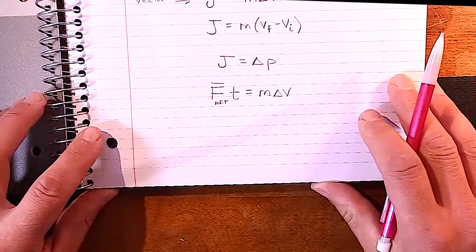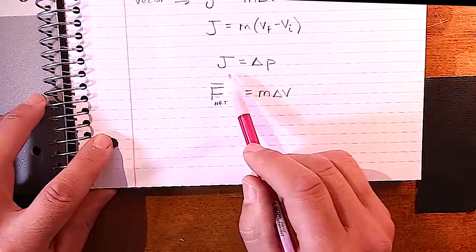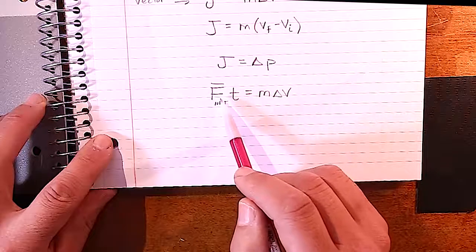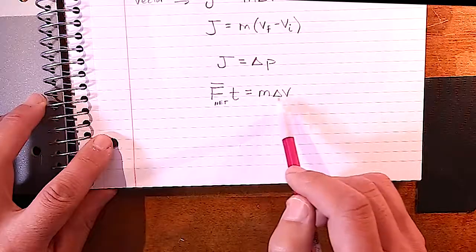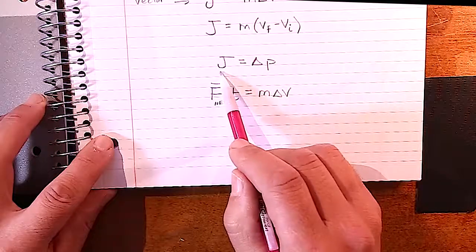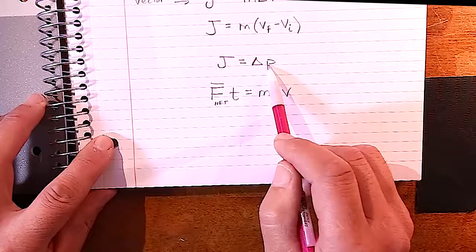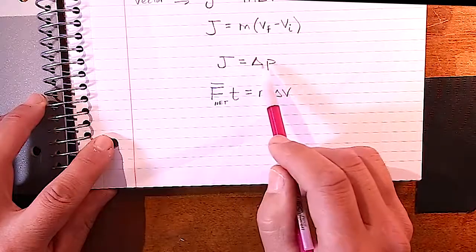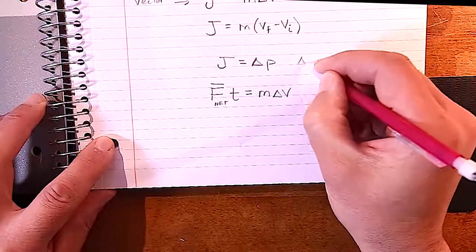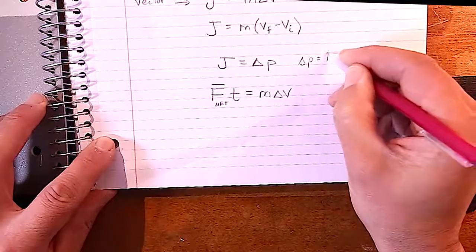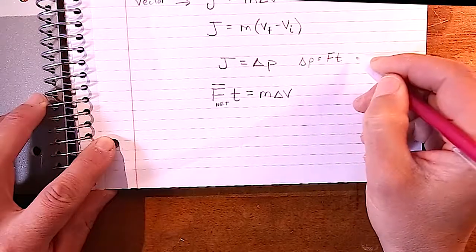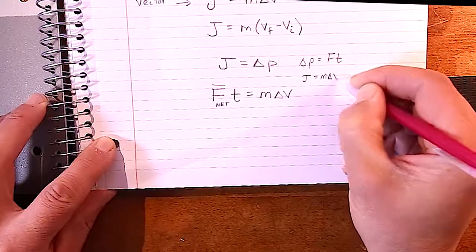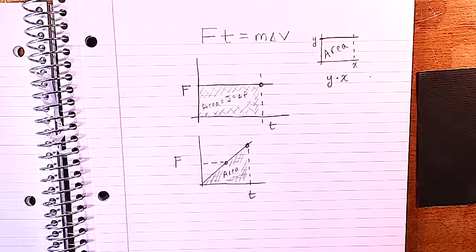When solving these problems, write out J equals delta P, then rewrite it as FT equals M delta V. Because impulse equals change in momentum, we can also say delta P equals FT, and J equals M delta V. All of these are equivalent and extremely useful to know.